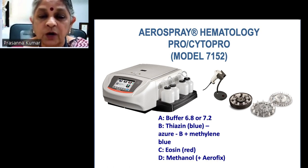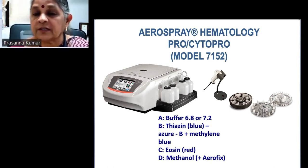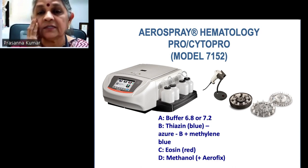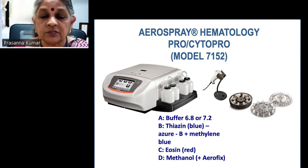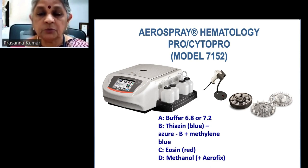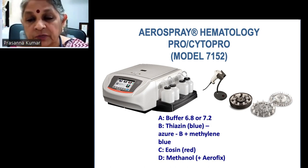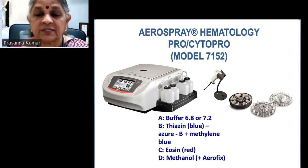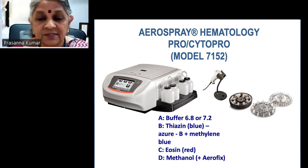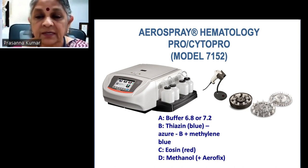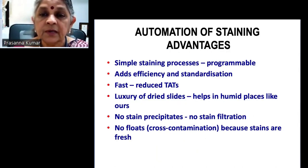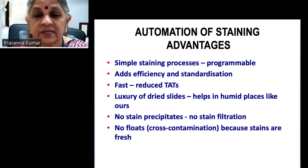After years of toggling with manual stains, we decided to invest in the Aerospray — a neat, automated hematology stainer. It uses a buffer with pH adjustable between 6.8 to 7.2, a thiazine stain — Azure B together with methylene blue — as well as eosin and methanol. These reagents are provided by the company. The automation of staining obviously has many advantages.